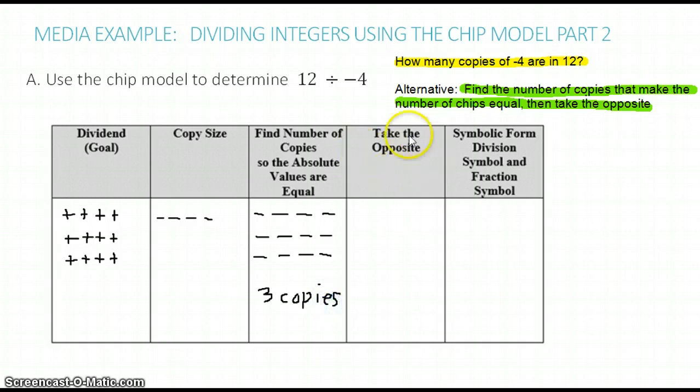Next, we're going to take the opposite of this result, and take the opposite of the number of copies. So taking the opposite of these CHIPs is just changing the sign.